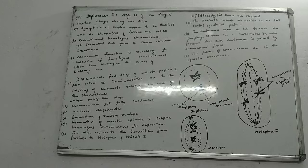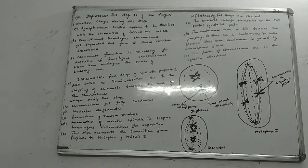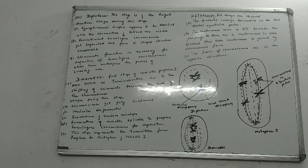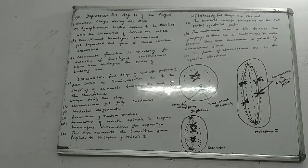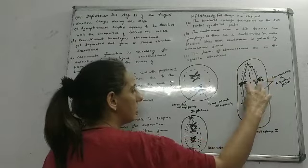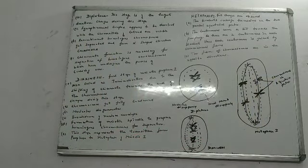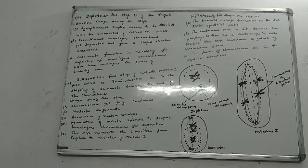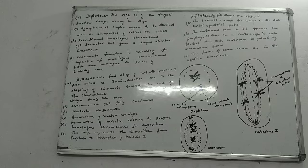As we know, there are two centromeres in each bivalent. So we will have two centromeres, and each centromere is joined by chromosomal fibers. The centromere shifts from the center towards the periphery. Since we have bivalents along each axis, we have two centromeres — each joined by chromosomal fibers. These fibers are known as chromosomal fibers, and they are in opposite directions.